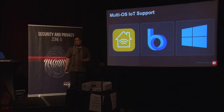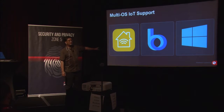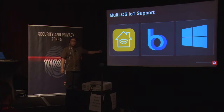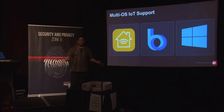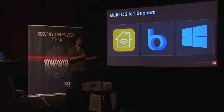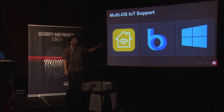iOS's foray into the Internet of Things is called HomeKit — announced about two years ago. It's primarily for smart home and home automation and can run on your iPad or iPhone. As far as comparing it to a Raspberry Pi, all of these HomeKit-enabled products can communicate with the HomeKit app on iOS.